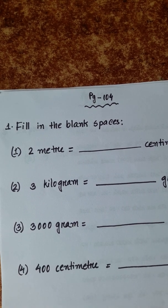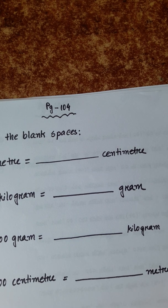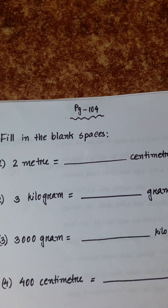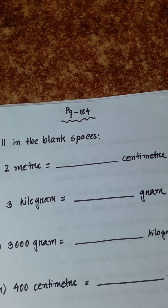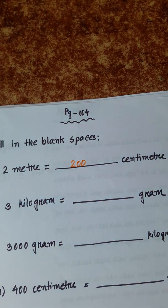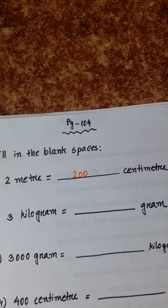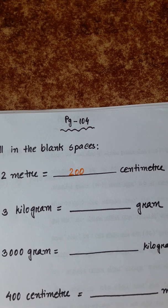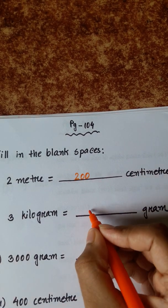Now fill in the blanks. Number one, 2 meter is equal to dash centimeter. 1 meter is equal to 100 centimeter, so 2 meter is equal to 200 centimeter. Next, 3 kilogram is equal to dash gram. 1 kilogram is equal to 1000 gram, so 3 kilogram is equal to 3 into 1000, that is 3000 gram.